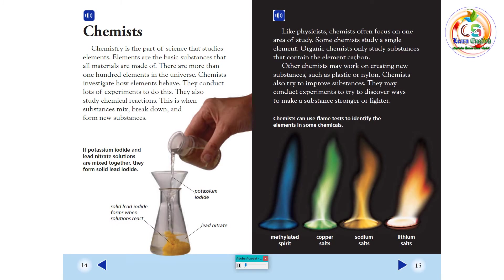Like physicists, chemists often focus on one area of study. Some chemists study a single element. Organic chemists only study substances that contain the element carbon. Other chemists may work on creating new substances, such as plastic or nylon. Chemists also try to improve substances. They may conduct experiments to try to discover ways to make a substance stronger or lighter.